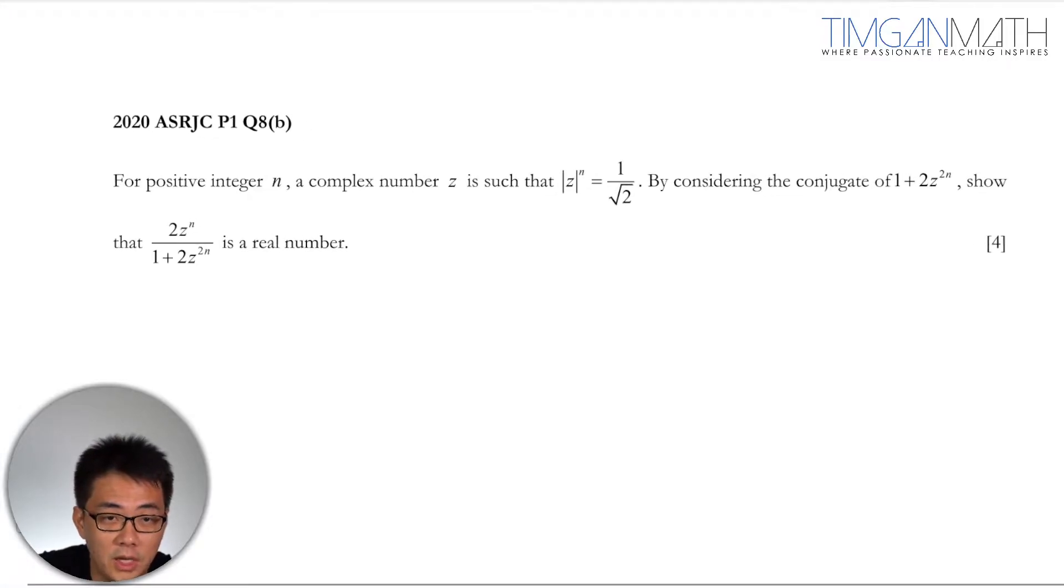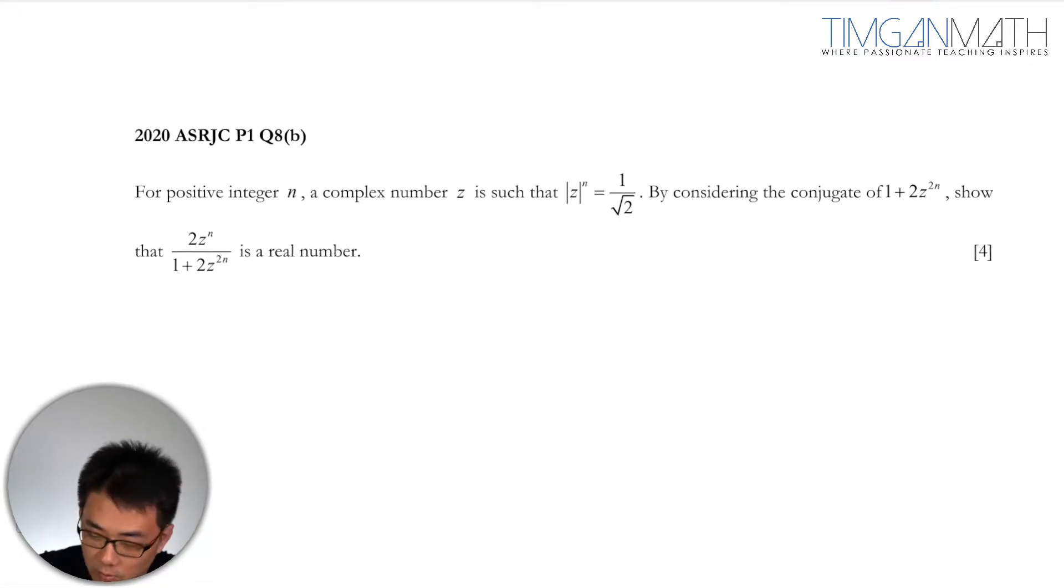For positive integer n, a complex number z is such that modulus z^n equals 1 over root 2. By considering the conjugate of 1 plus 2z^(2n), show that 2z^n over (1 plus 2z^(2n)) is a real number.